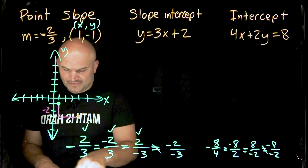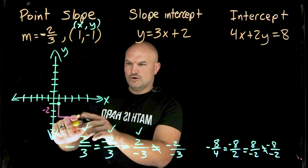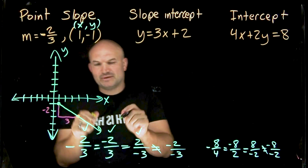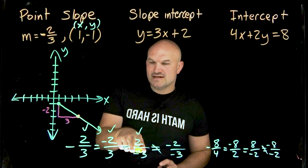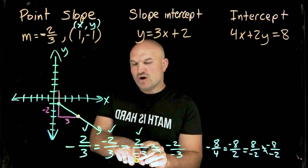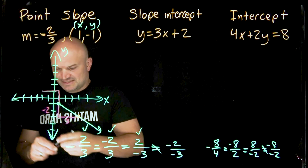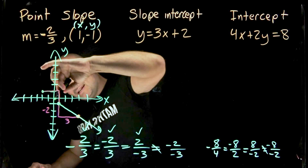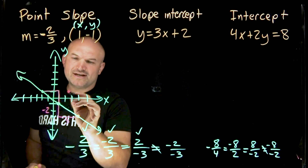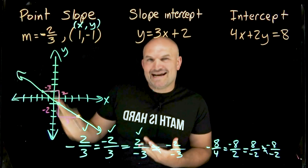From that next point we can go ahead and connect the line to the right. We can also extend to the left using the equivalent slope — positive two over negative three — meaning go up two and left three to find another point. And as you can see, it follows the exact same line. Remember, you only need two points to create a line.